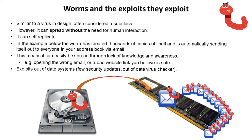The worm is automatically sending itself out to everyone in the address book via email. This means a worm can easily be spread through a lack of knowledge and awareness — for example, opening an infected email or following a bad link on a website you believe to be safe. Worms also tend to easily exploit out-of-date systems where few security updates or patches have been applied, or where the virus checker is out of date.